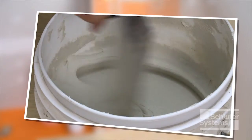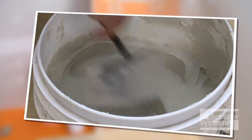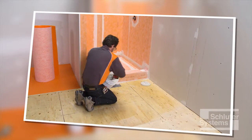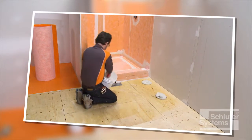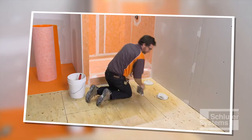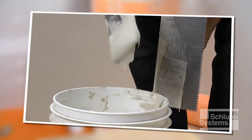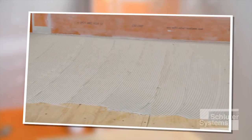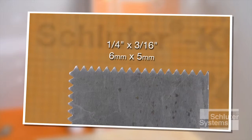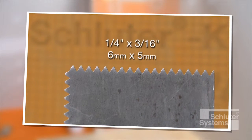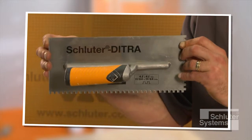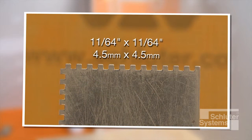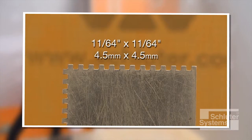Schluter-DITRA is installed simply and easily with thin-set mortar. In this case, a modified thin-set mortar is used because the DITRA is being installed over a plywood substrate. The mortar is mixed to a fairly fluid consistency but still able to hold a notch. A one-quarter inch by three-sixteenth inch V-notched trowel or the Schluter-DITRA trowel, which features a 4.5mm by 4.5mm square notch design, is used to apply the mortar.